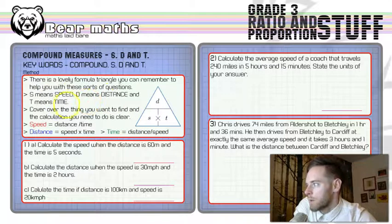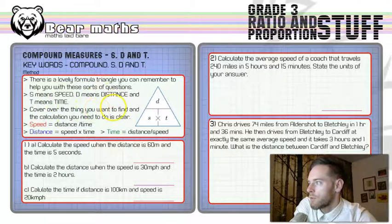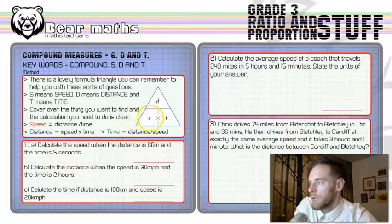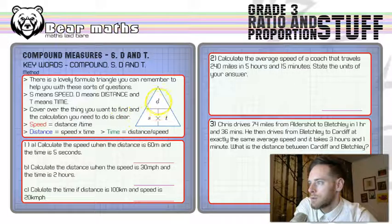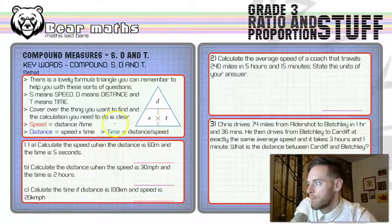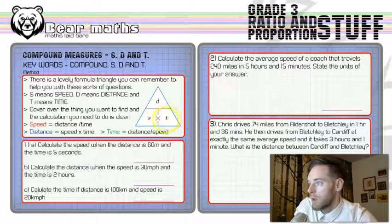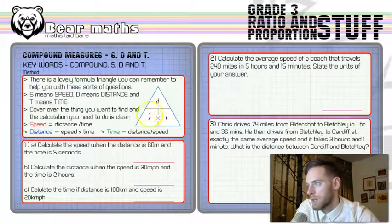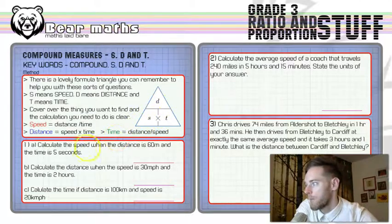I've already mentioned what they mean. Cover over the thing that you want to find and the calculation you need to do is clear. If you want to find speed, you cover over S, and it tells you to do D divided by T. That's why speed equals distance divided by time. Distance equals speed multiplied by time, and time equals distance divided by speed. There's our three calculations we can get from this formula triangle.